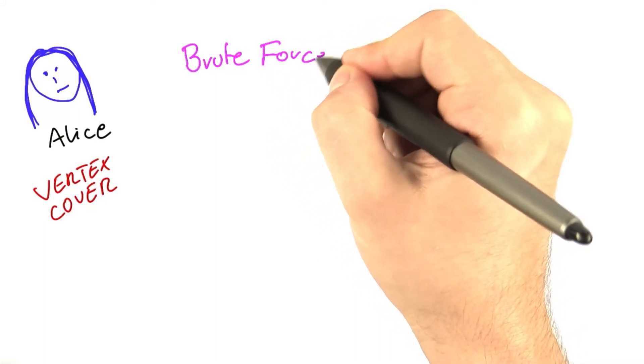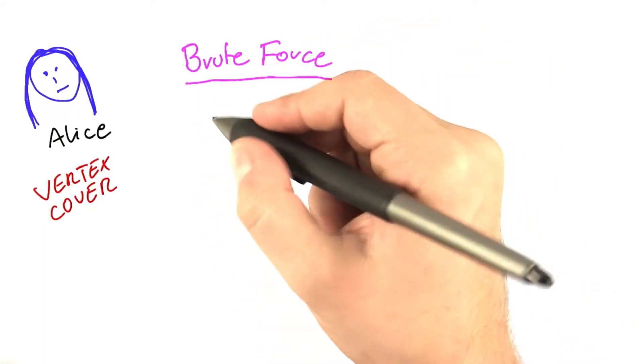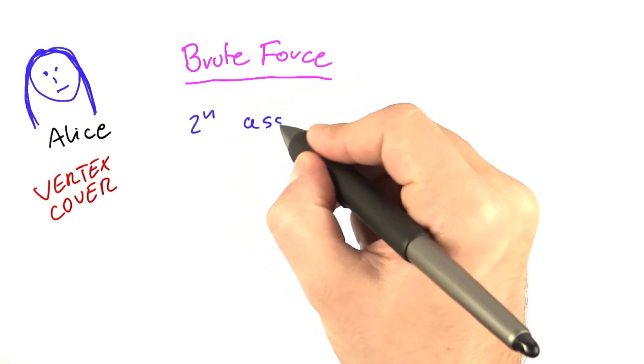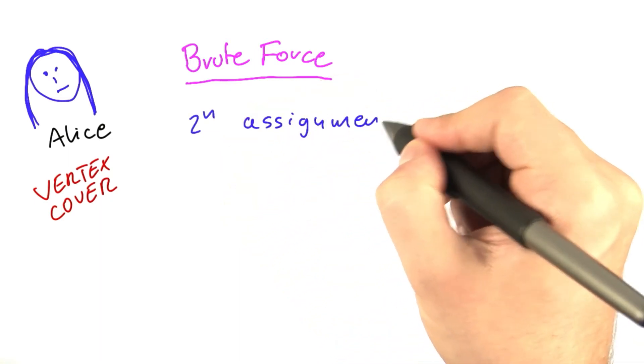So we started out with a brute force algorithm and the brute force algorithm basically considered 2 to the power of n assignments.